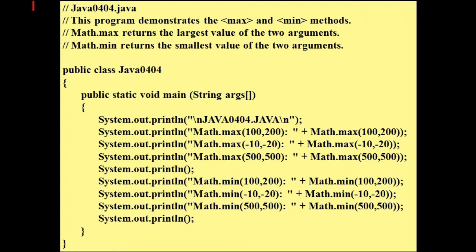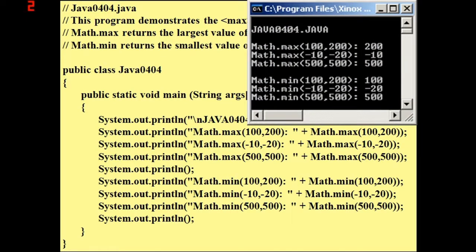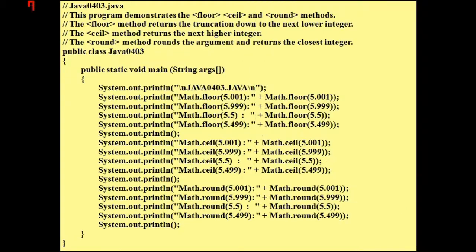You can see System.out.println Math.max(100, 200), so this is showing you what you're calling so you know what's going on and it's going to give you 200. In here it'll give you negative 10. Here it'll give you 500. And then here on min it'll give you 100, negative 20, and 500. You can see it's right there. I may have discussed this in the last tutorial but I don't really remember.